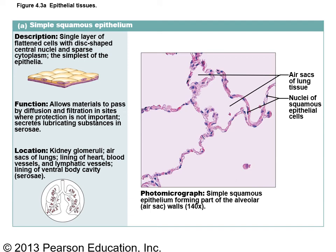Simple squamous epithelium is one layer of flat cells. A good example of where this is found is in the alveoli — the little air sacs in the lungs. For the lecture test, make sure you know where each epithelium is located and its characteristics.